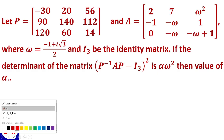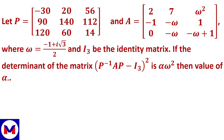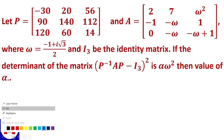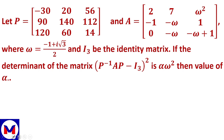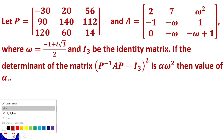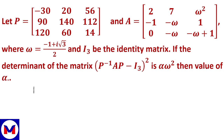Minimum calculation honi chahiye — that should be our goal. We have P given, so first let's find P inverse. Let M be the matrix whose determinant we need to find. We have this relation: let P inverse AP minus I3 be called M.